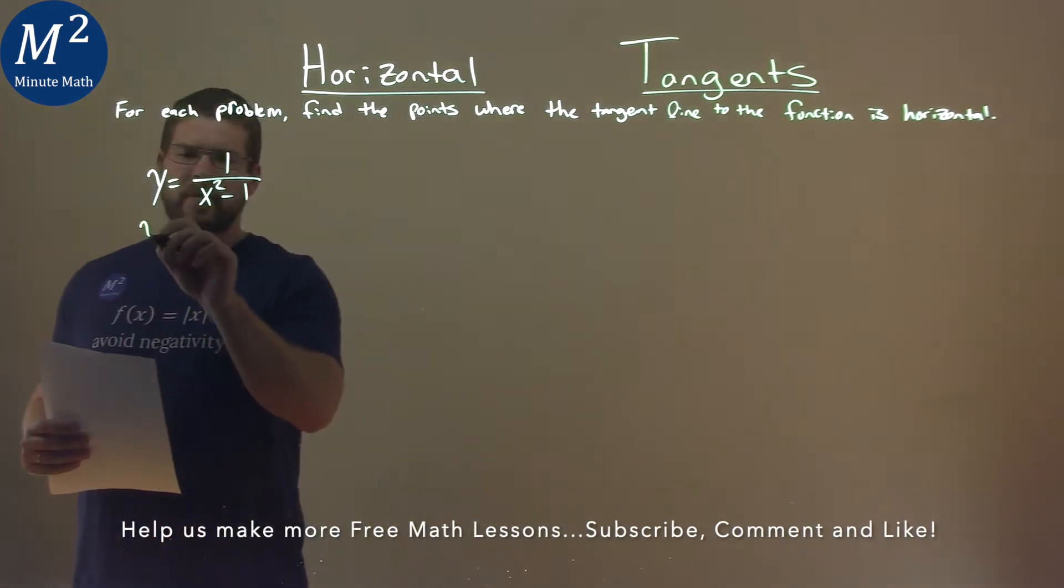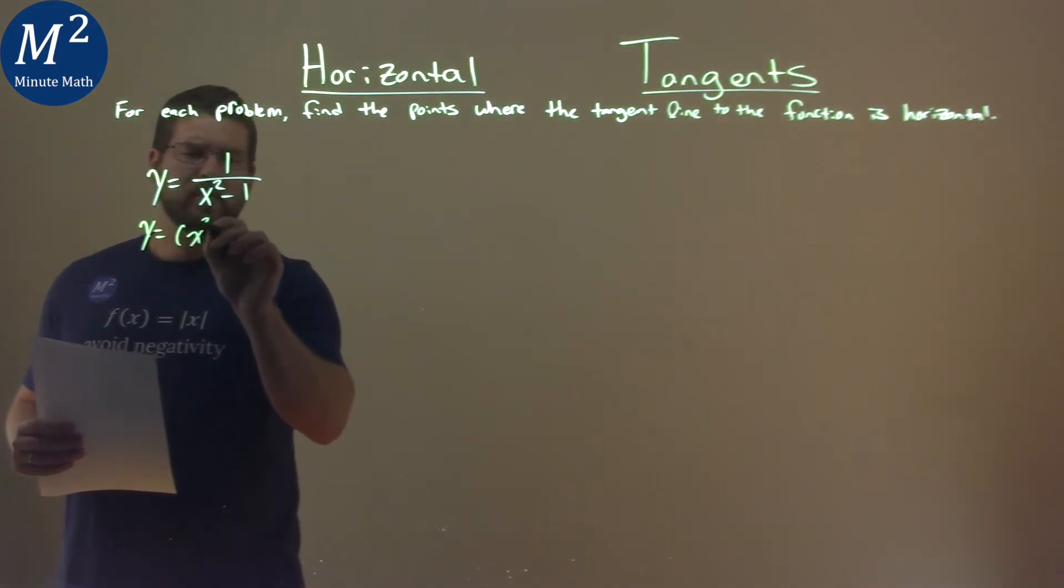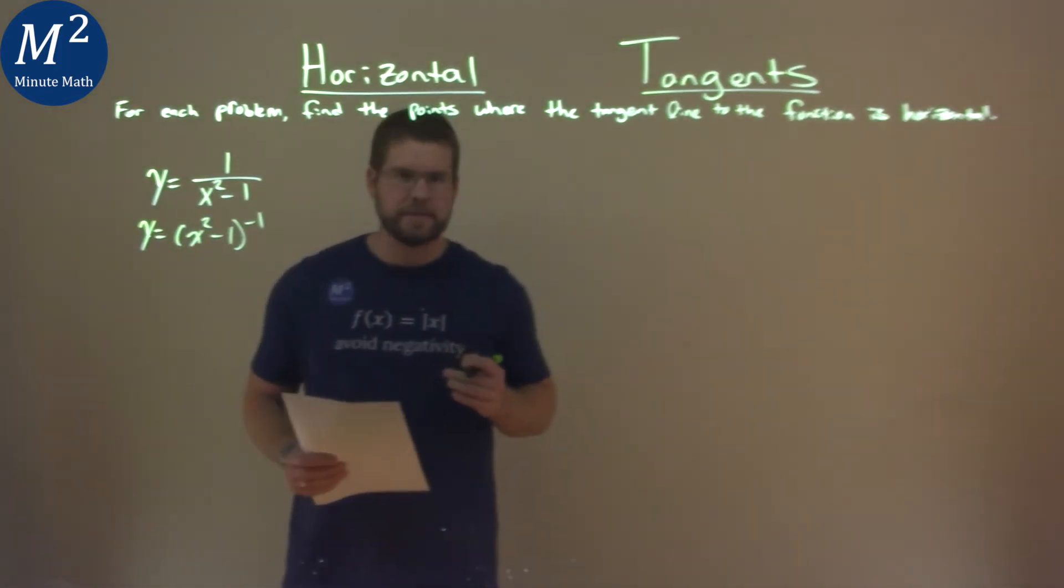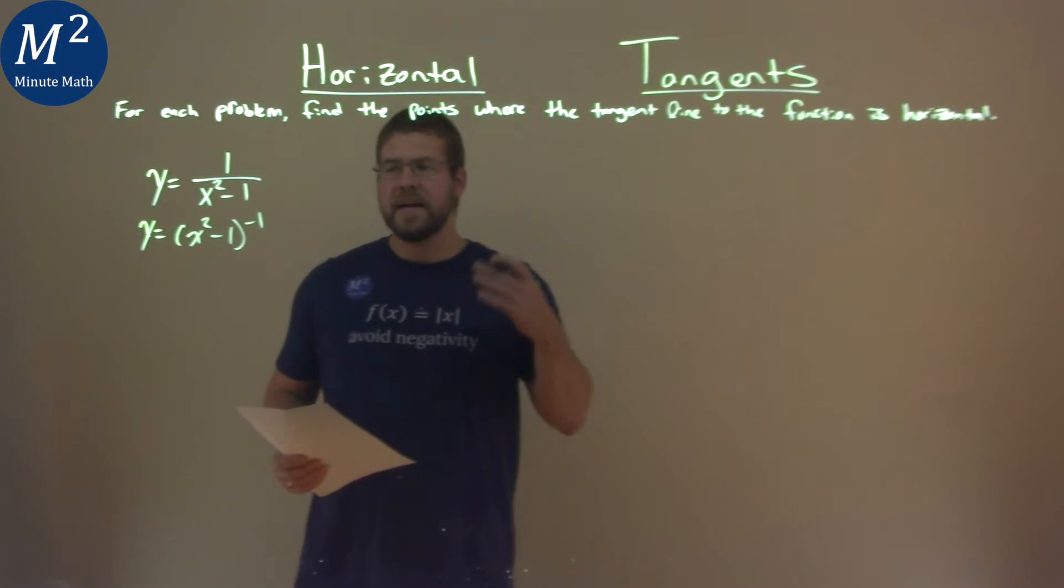Now, I like to rewrite this to be y equals x squared minus 1 to the negative 1 power, and that's only because I like taking the derivative of this, and that's really our first step, taking the derivative.